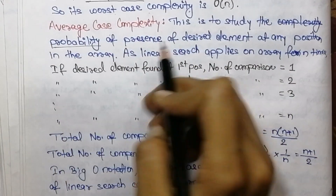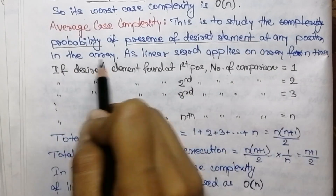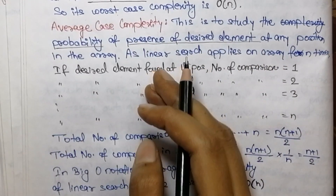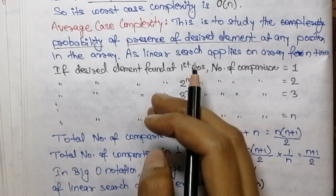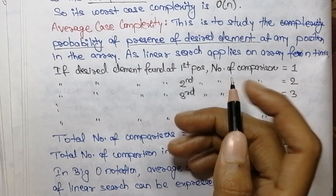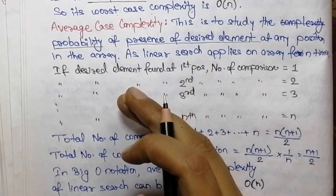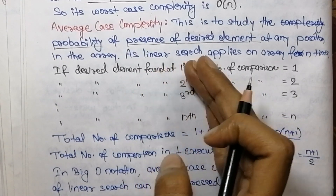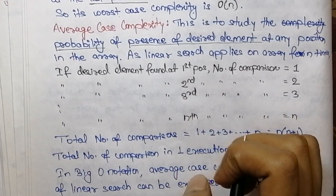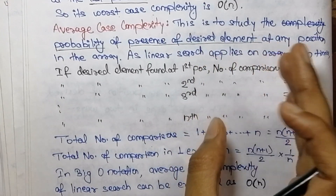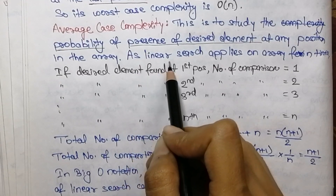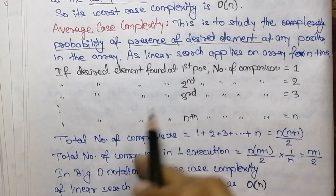The average case complexity studies the probability of presence of the desired element at any position in the array. If the desired element is found at the first position, only one comparison takes place. If found at the second position, two comparisons take place. In general, if the desired element is found at the k-th position, there will be k number of comparisons. To find the average case complexity, we calculate the average number of comparisons in finding the position of a desired element.